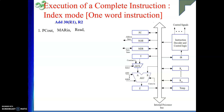So PC out, MAR in — these signals we are familiar with. We do Y in, then WMFC, then MDR out, IR in. So till now in step number three, we have got the instruction in our IR.